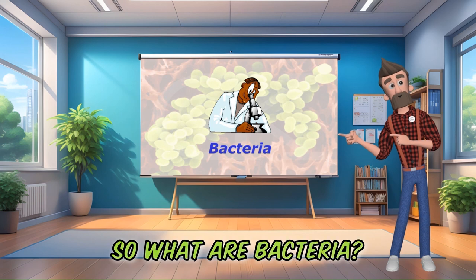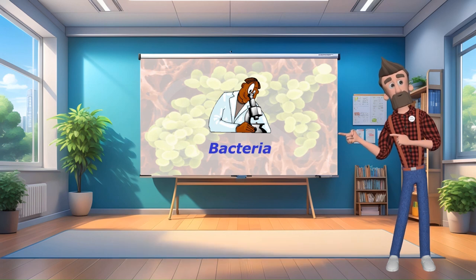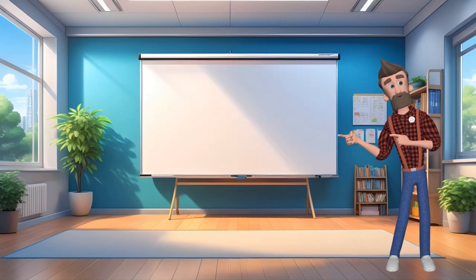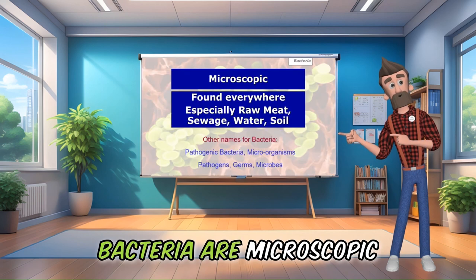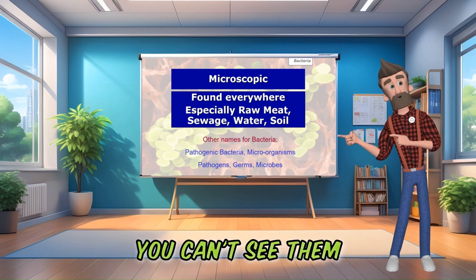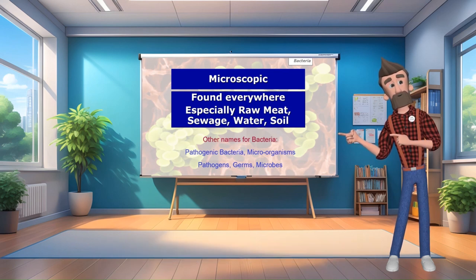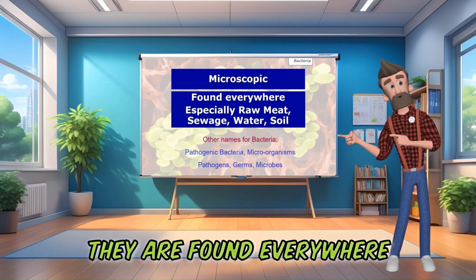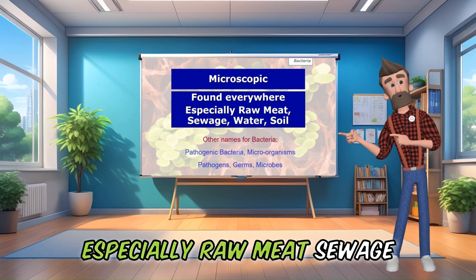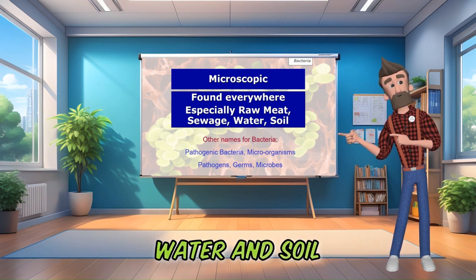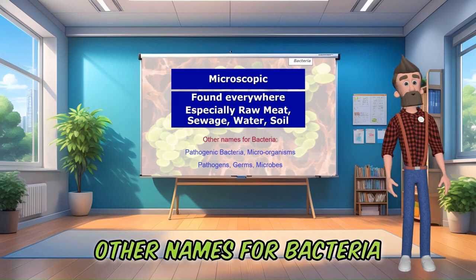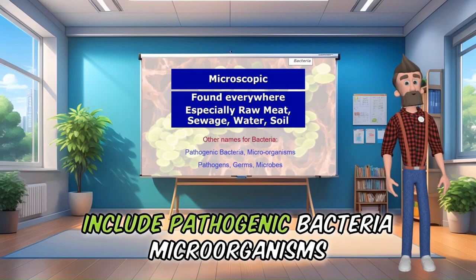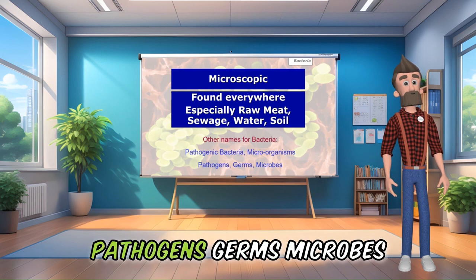So what are bacteria? Bacteria are microscopic — you can't see them with the naked eye. They are found everywhere, especially in raw meat, sewage, water, and soil. Other names for bacteria include pathogenic bacteria, microorganisms, pathogens, germs, and microbes.